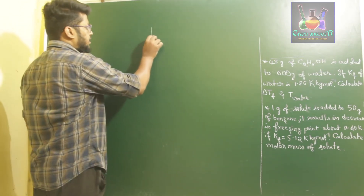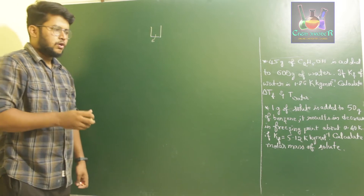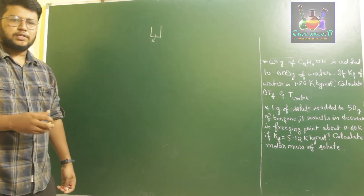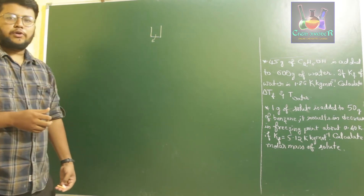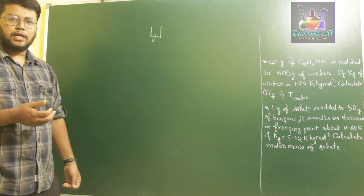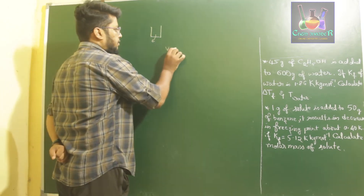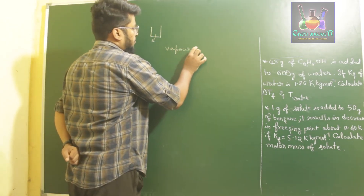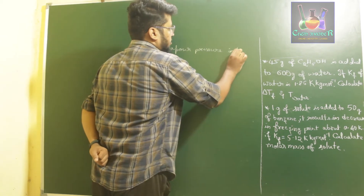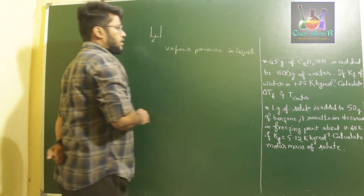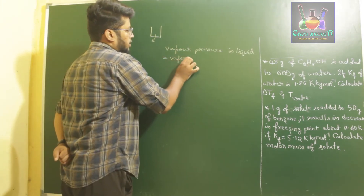For example, if this is a liquid — let us say water — water forms ice when it freezes. That is, we are decreasing the temperature in order to make the water get frozen to form ice. This process of freezing takes place when the vapour pressure of the solvent in liquid phase becomes equal to the vapour pressure of the solvent in solid phase.